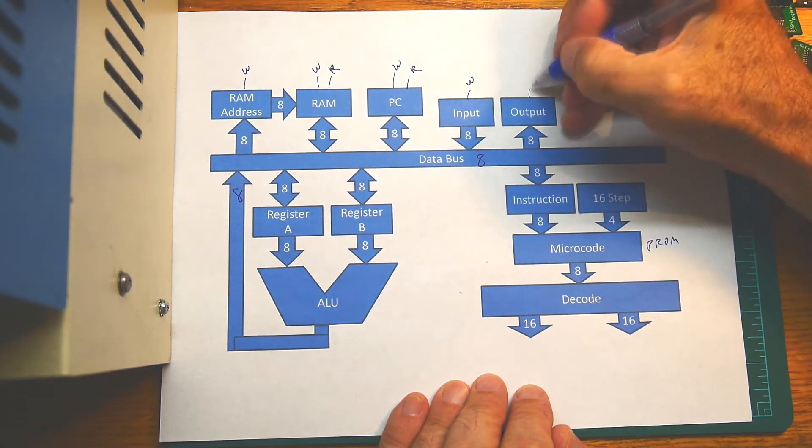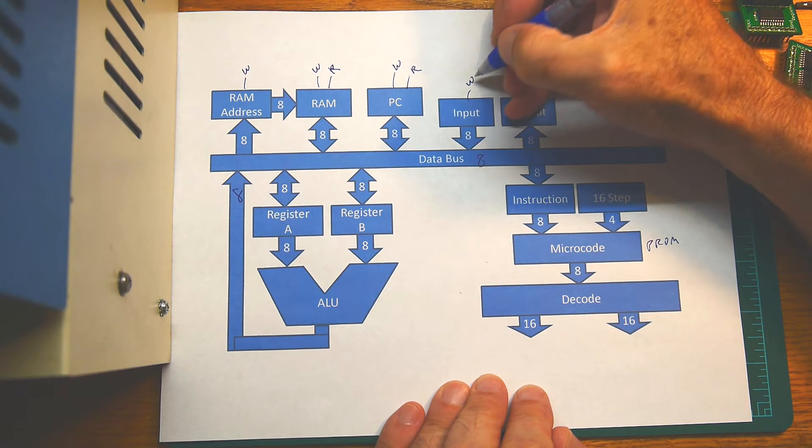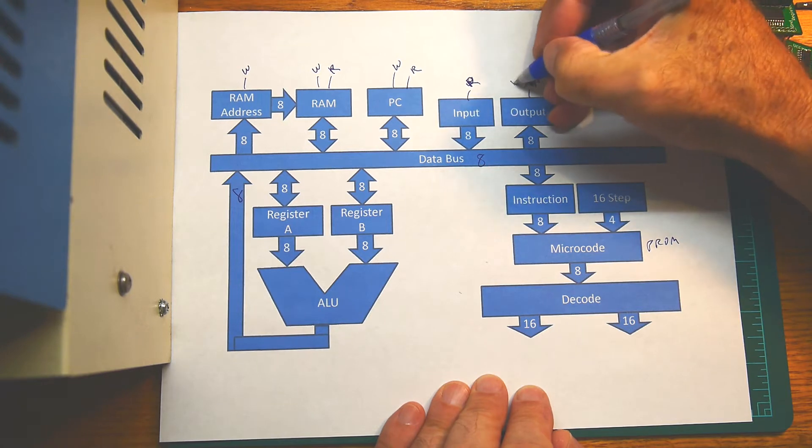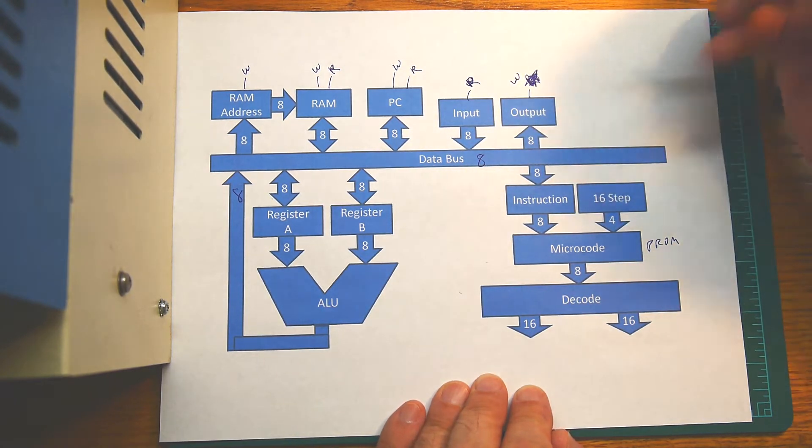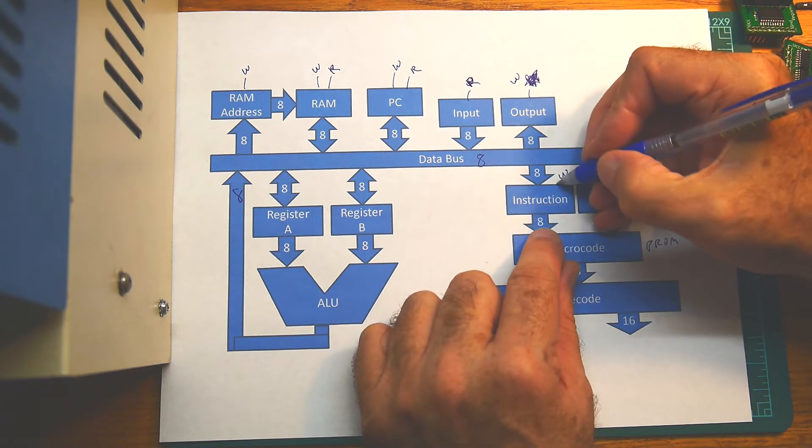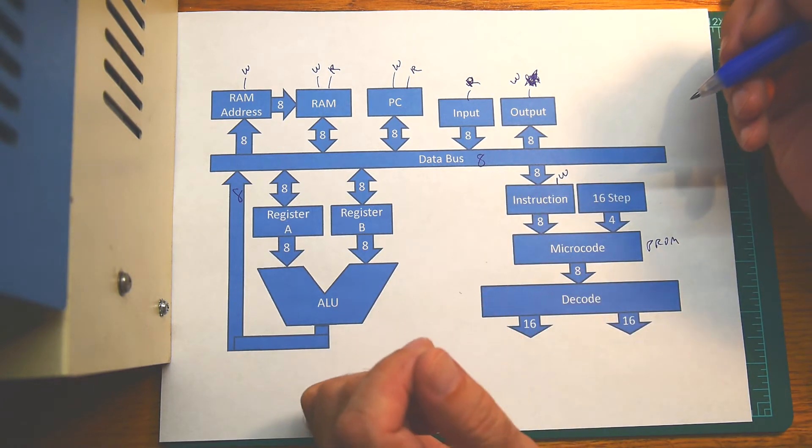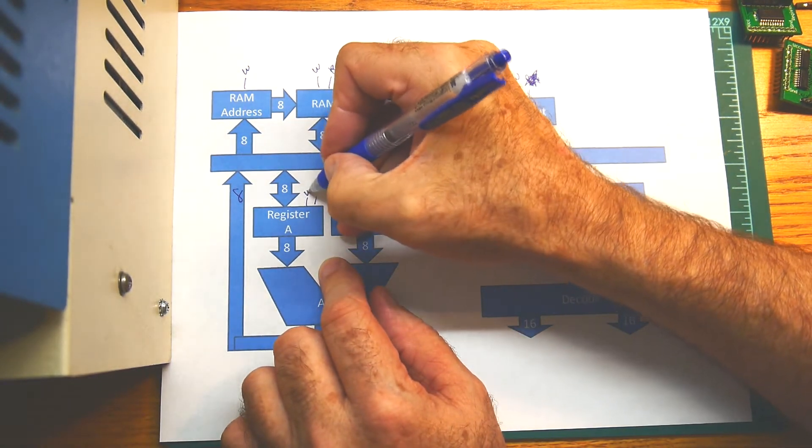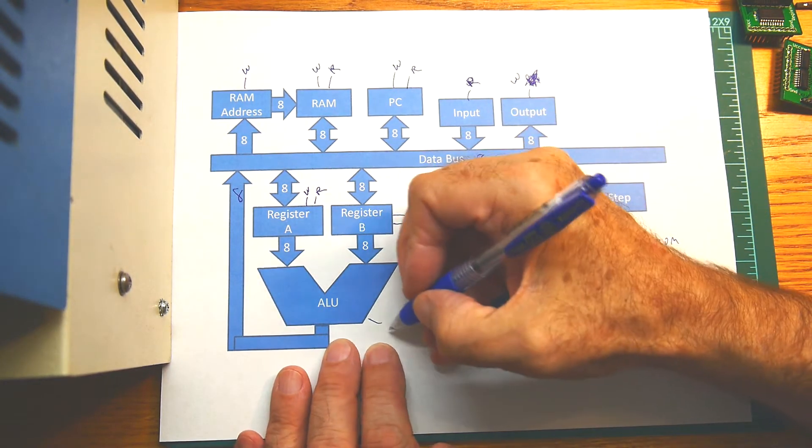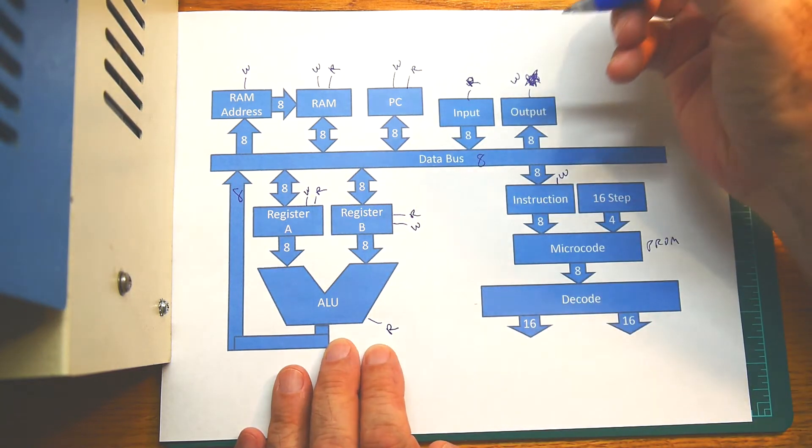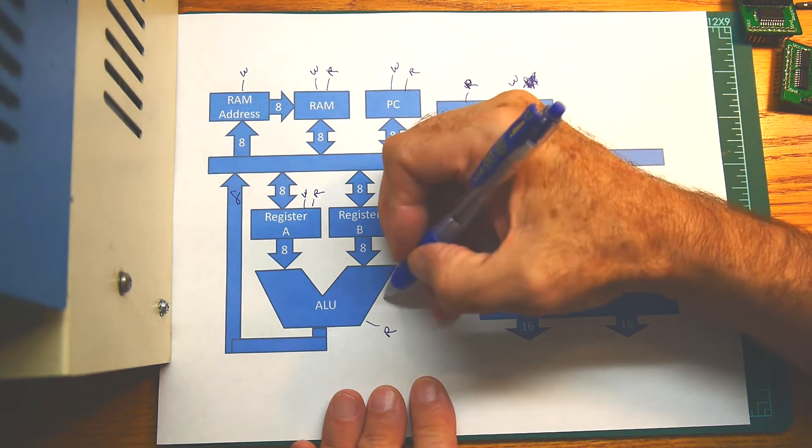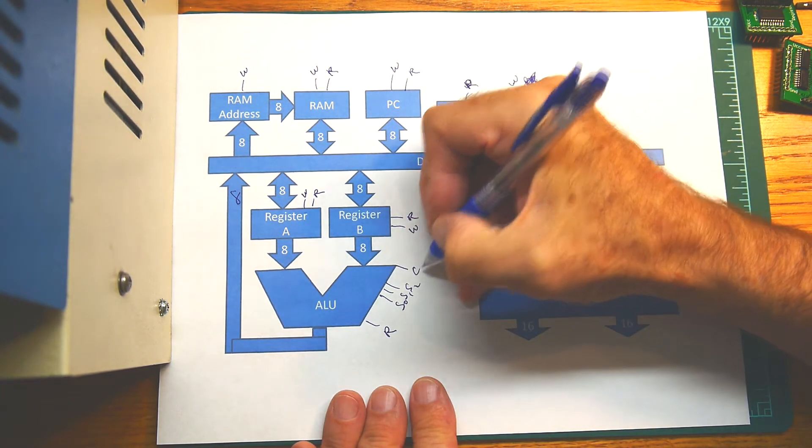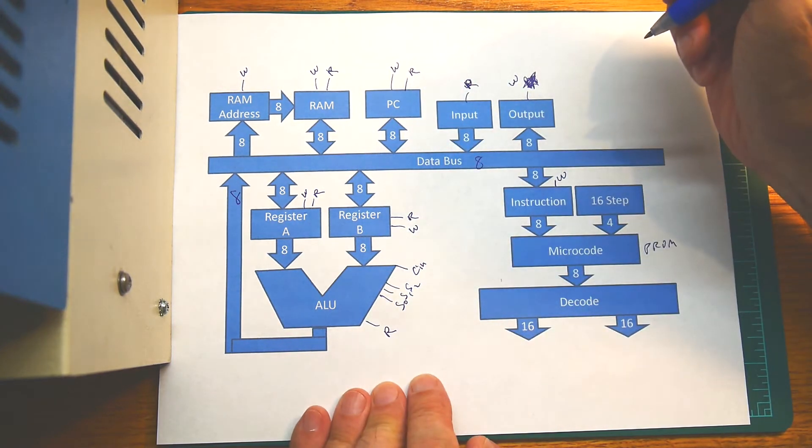This is a read, this is a write. There'll be some line for a write into the instruction. The registers have a read and a write. The ALU has a read.